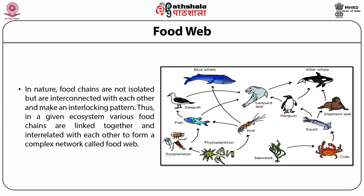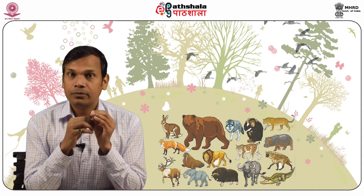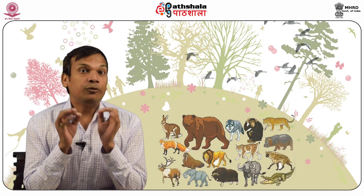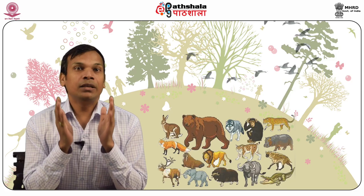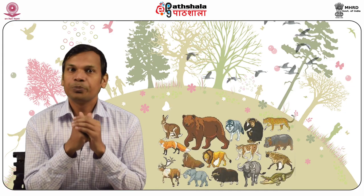The producers occupy the first trophic level, herbivores occupy the second trophic level, carnivores the third trophic level, and secondary carnivores occupy the fourth trophic level. This trophic level classification is one of function, not of species. The number of species of predators in the food web typically exceeds the number of species of prey by an average of 1.3 predator species per prey species. The energy flow through a trophic level equals the total assimilation at that level, which equals the production of biomass and respiration.